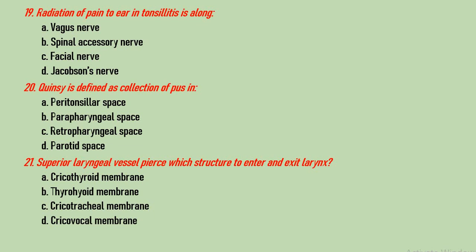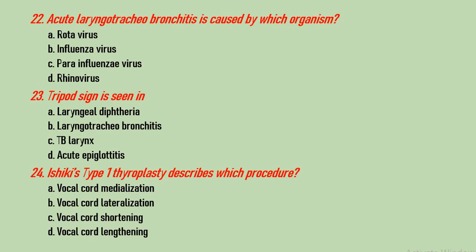Question number 22: acute laryngotracheobronchitis is caused by which organism? Options are Rotavirus, Influenza virus, Parainfluenza virus, and Rhinovirus. The correct answer is Parainfluenza virus — again a straightforward answer. Question number 23: tripod position is seen in which condition? Options are laryngeal diphtheria, laryngeal tracheobronchitis, tuberculosis of larynx, and acute epiglottitis. The correct answer is acute epiglottitis. As there is swelling of the epiglottis, the child lies in the tripod position for breathing.